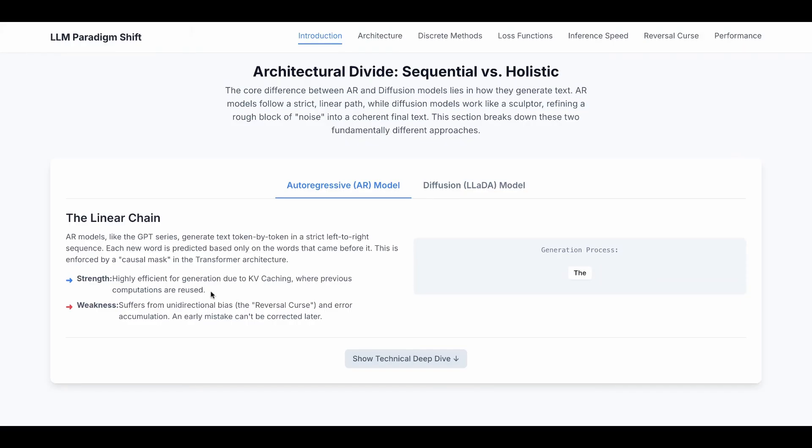The weakness is it suffers from one directional bias, aka the reversal curse, which I will show an example later. And error accumulation, so an early mistake cannot be corrected.